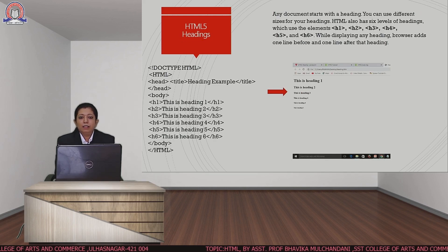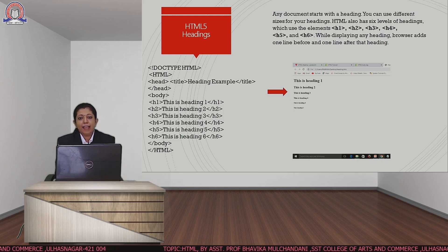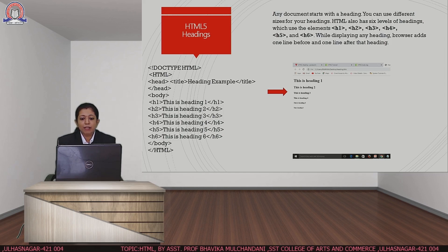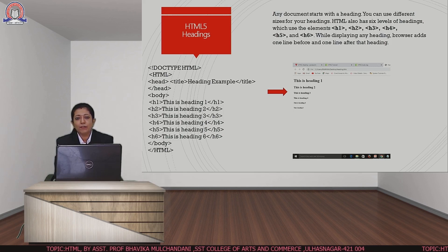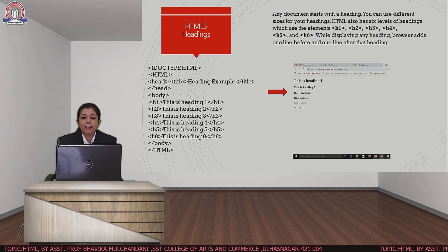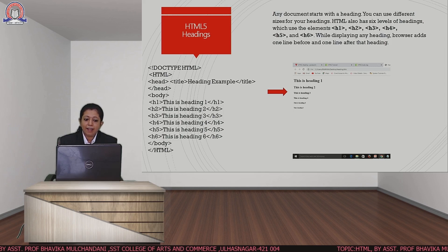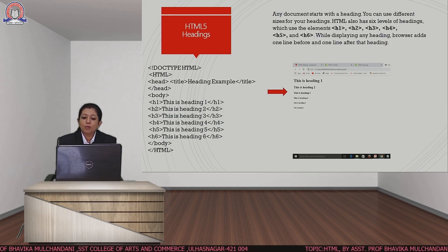The next important tag is the heading tag. Heading tags are predefined headings in HTML. There are a total of 6 heading tags: H1, H2, H3, H4, H5, and H6. H1 is the highest heading tag with the largest size, and H6 is the heading tag with the smallest size.